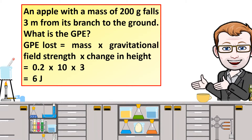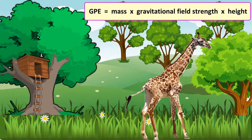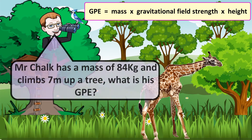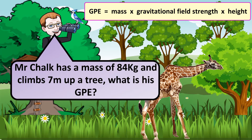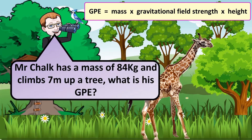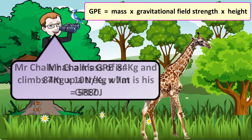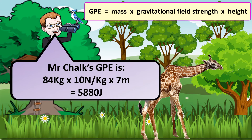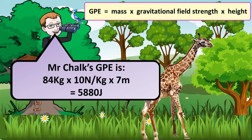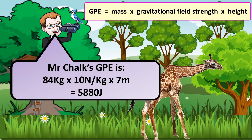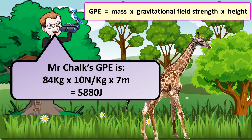Now let's have a look at a range of different examples. Mr. Chalk has a mass of 84 kilograms and climbs 7 meters up a tree. What is his GPE? That would be 84 times 10 times 7, which gives 5,880 joules.